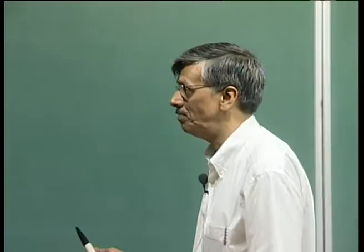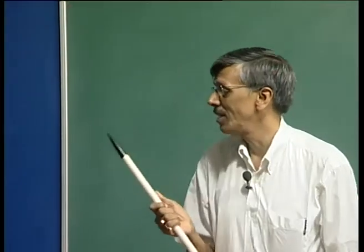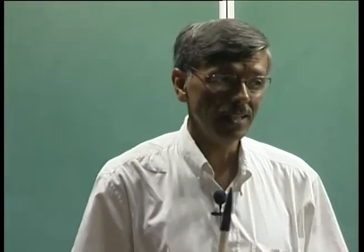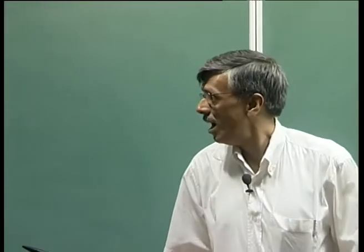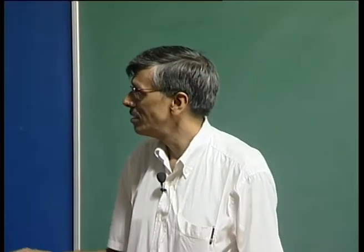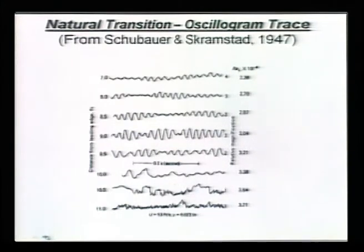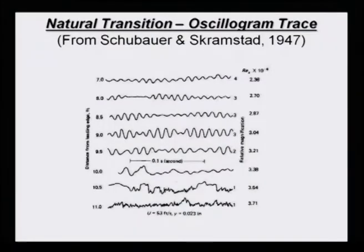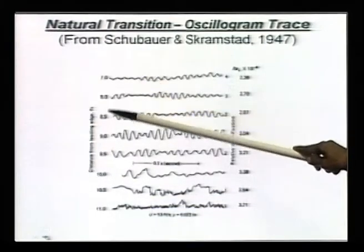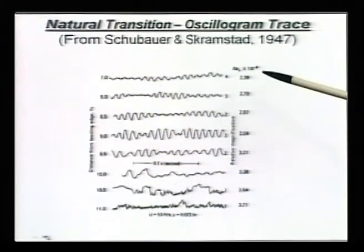Last week, we were talking about what really happens in a real flow. The theory we have discussed so far refers to normal mode - we look at a single frequency and the corresponding wave numbers are selected by the eigenvalue search. In a natural flow, this is how you would see the trace if you put a probe at a particular point as a function of time. These are at different locations from the leading edge of the plate, so distance is growing in this direction, and the corresponding Reynolds number based on current length goes on like this.